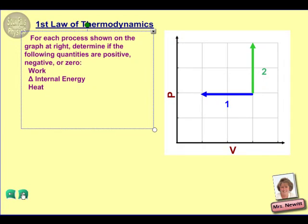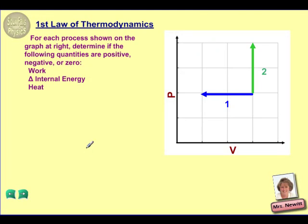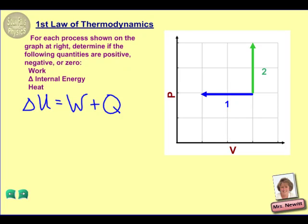We'll begin here with process one. Usually we want to start with the amount of work. In our equation for the first law, delta U is equal to work plus heat. Work is probably the easiest one to start with because it comes directly from the graph. Remember that work is equal to negative pressure times change in volume.